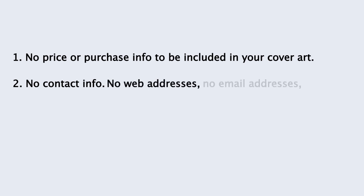Number one: no price or purchase info to be included in the art. So if you're selling any products, you can't say how much they are or if there are any discounts or anything like that. Number two: no contact info, which means — this is crazy — no web addresses, no email addresses, no phone numbers or anything else that Facebook says should be listed on the about page. So just no contact information, which is crazy but that's the way it is.